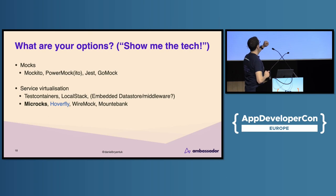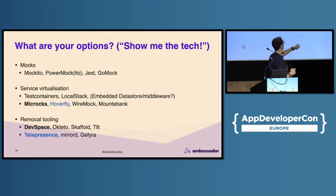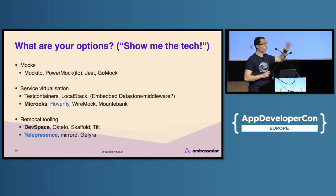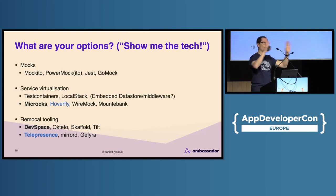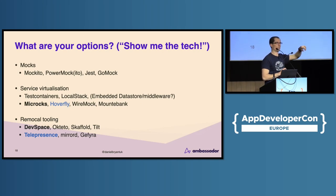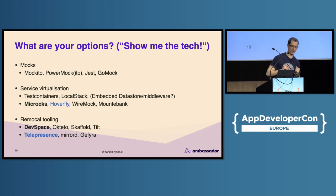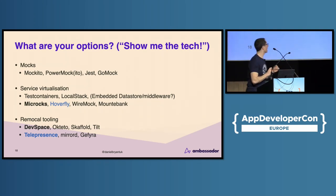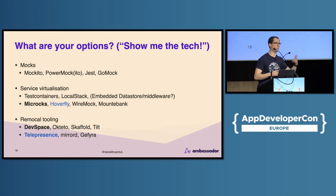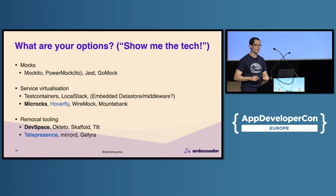They're great tools — check them out. The final category is Remocal tooling: DevSpace, Octeto, Scaffold, Tilt, Telepresence, Mirrord, and Gefyra. That's your full list — all open source as far as I know. I've put in bold the CNCF Sandbox projects: Microx, DevSpace, and Telepresence. In blue are the tools I have personally worked on: I worked on Hoverfly about 10 years ago, and I worked on Telepresence as part of the Ambassador Labs community.